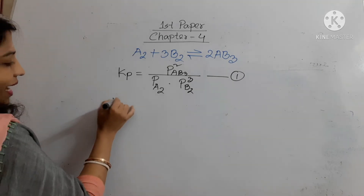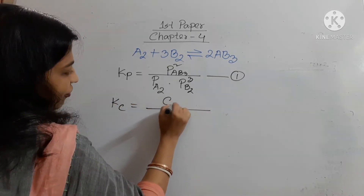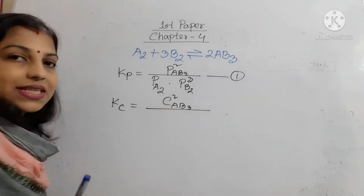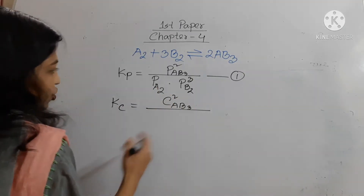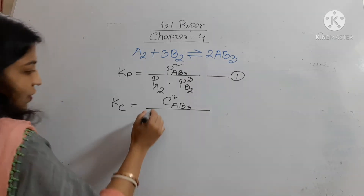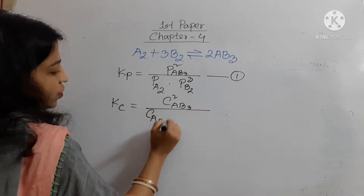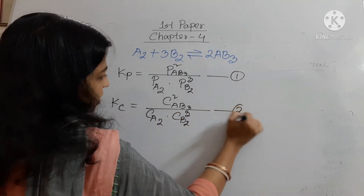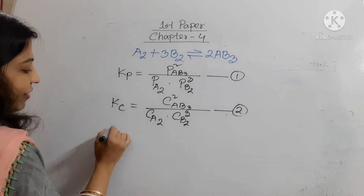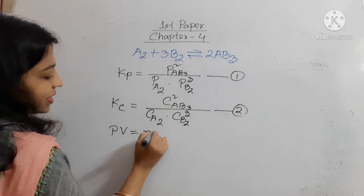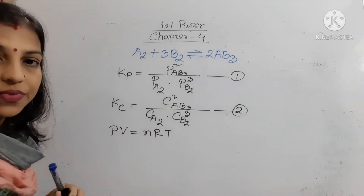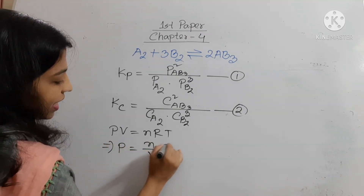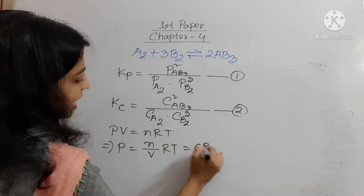Again, Kc is the molar concentration of the product — C of AB3 squared — divided by the total molar concentration of the reactants: C of A2 into C of B2 whole cube. This is our equation number 2. You know, PV = nRT. This is our ideal gas equation. From this equation, we can write P = (n/V)RT, that means P = CRT.